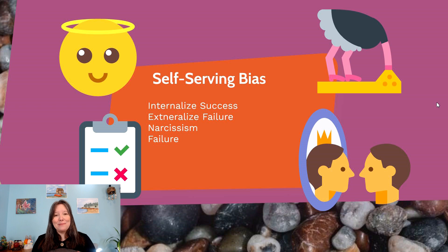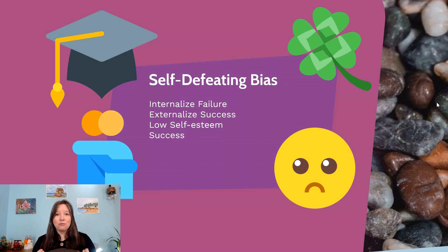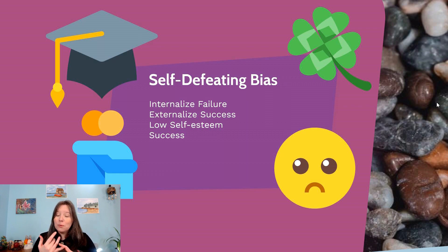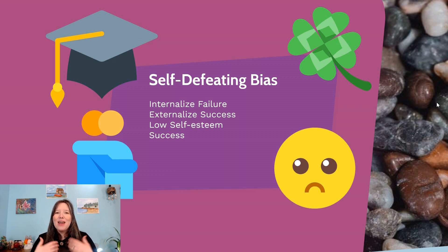The opposite of the self-serving bias is the self-defeating bias — just the reverse filter. Instead of externalizing failures, you internalize them and blame yourself whenever something goes wrong, while you externalize your successes and give credit to other people. So whenever something goes right, whenever someone flatters them, they say, 'Oh, they didn't mean that, they just felt like they had to say that.' Or if they get a good grade, they say, 'That was just a fluke, or the test was easy — it's not due to me actually being smart.' They consider all their successes not to be their hard work, personality, or intelligence, but something like luck or conditions.